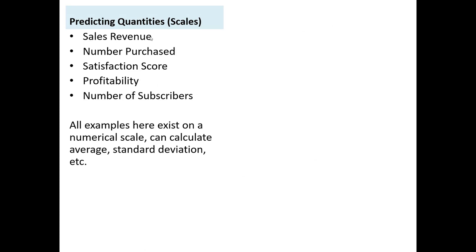When talking about predicting quantities earlier, I was referring to scaled values — things like sales revenue, the number of items purchased, a satisfaction score from zero to ten, profitability, or the number of subscribers. These all fall on a numerical scale and we can easily calculate their average, standard deviation, and so on. All of the prediction models we've built thus far have focused on these types of outcomes.